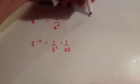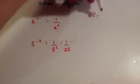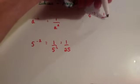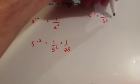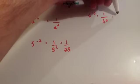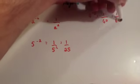Here's another example: 4 to the power of minus 3 would be the same as 1 over 4 cubed. And 4 times 4 times 4 is 64, so that's the same as 1 over 64.